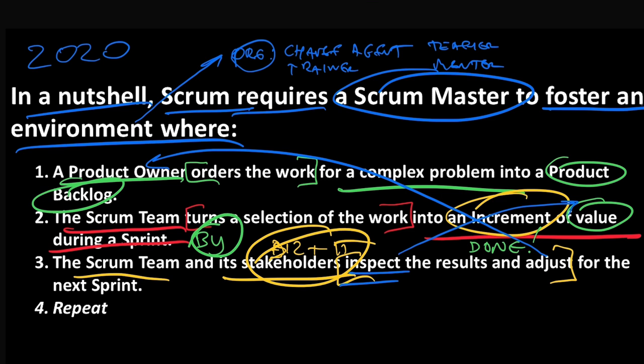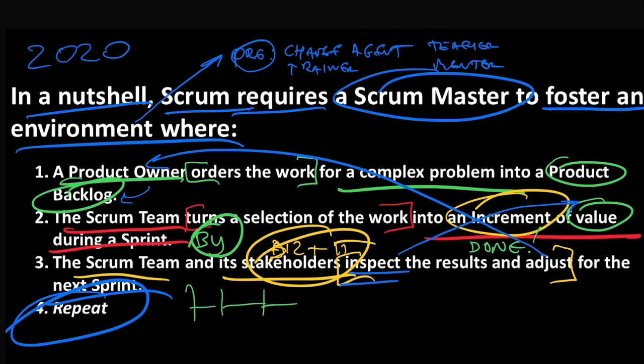We're going to adjust. The product owner is going to take those adjustments and update the product backlog, because we have another sprint coming — we're going to repeat all of this. When one sprint ends, the next begins, and so we're going to take that learning and carry it forward and make sure that we're aligned to the customer needs, doing the right thing at the right time the right way.